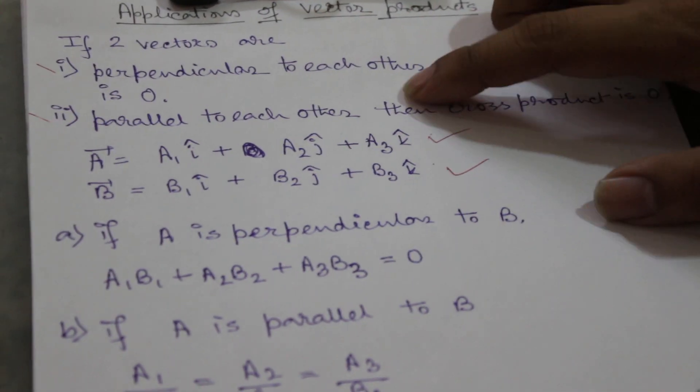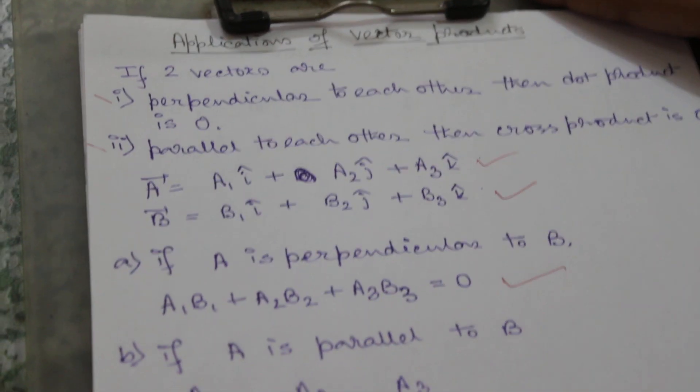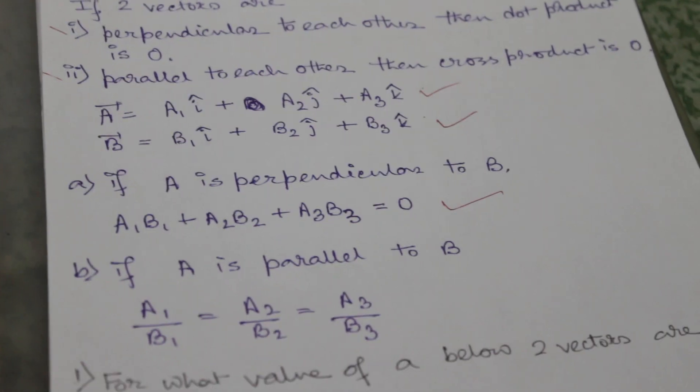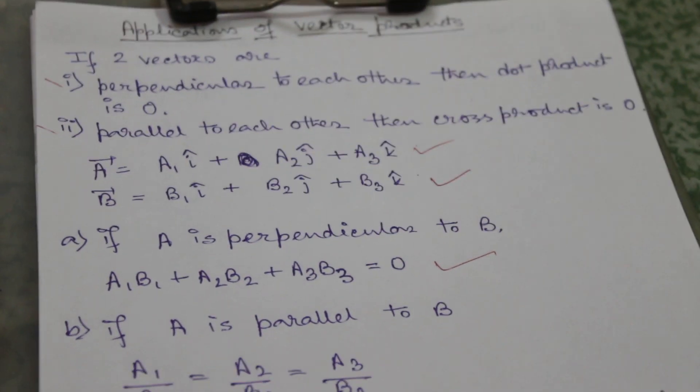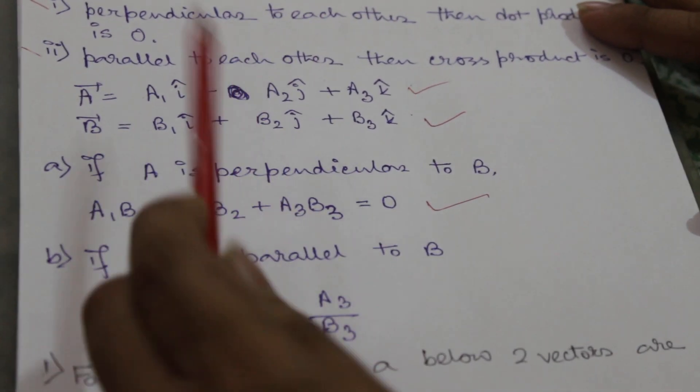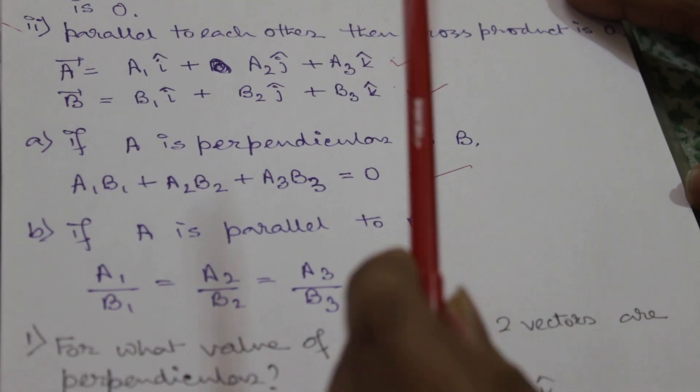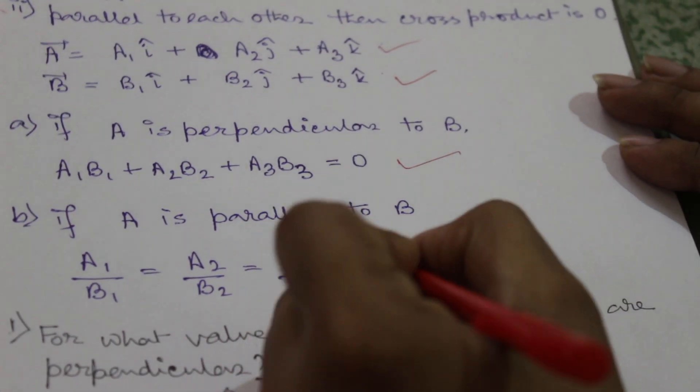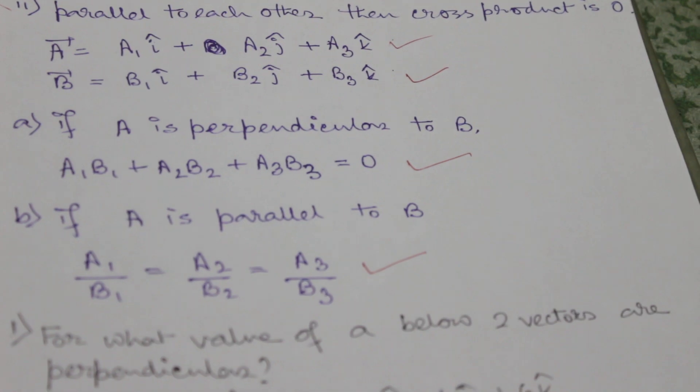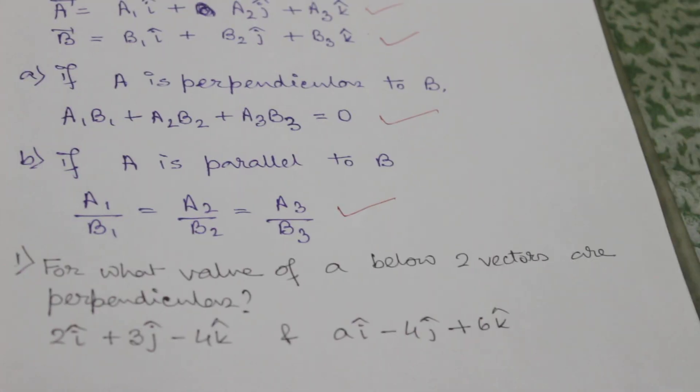And if A is parallel to B, then a1 by b1 equals a2 by b2 equals a3 by b3. This will hold. So let's have one example. For what values of a are the below two vectors perpendicular?